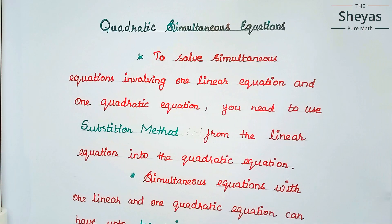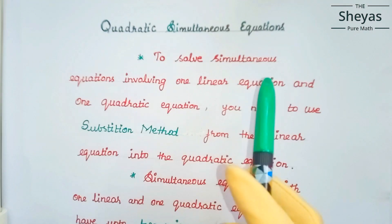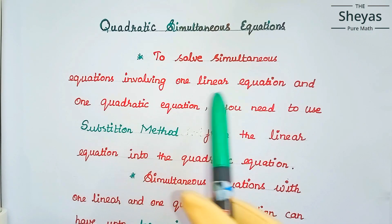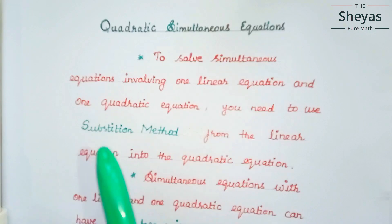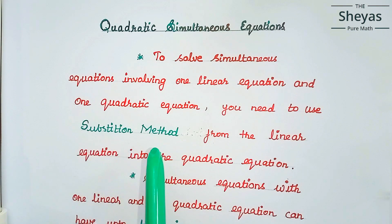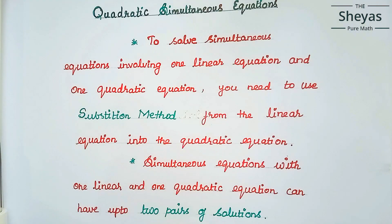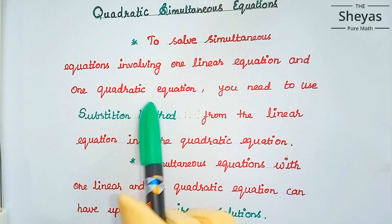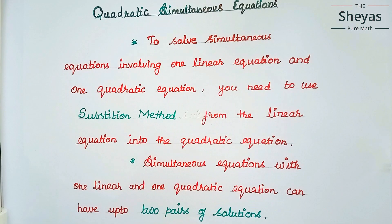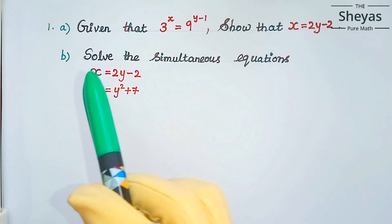Hello friends, today we are going to discuss quadratic simultaneous equations. We are going to solve simultaneous equations involving one linear equation and one quadratic equation. For that, we are going to use the substitution method. Please refer to my video titled 'Substitution Method' for a clear understanding. With one linear and one quadratic equation, we'll get two pairs of solutions.